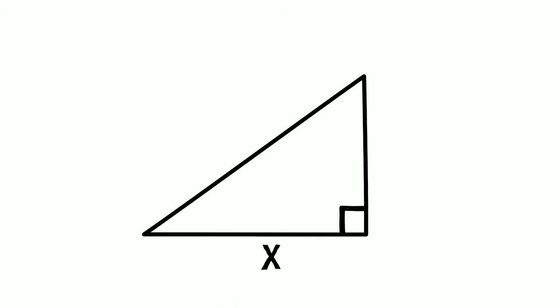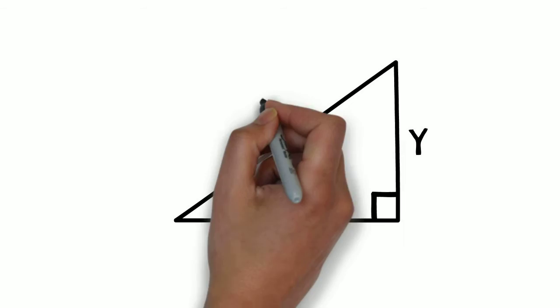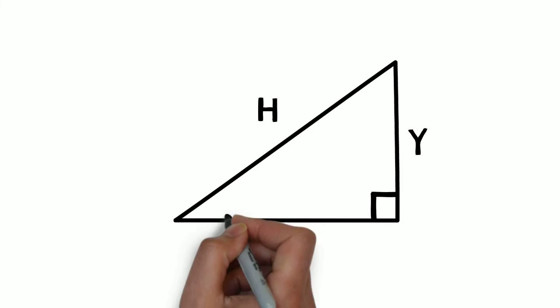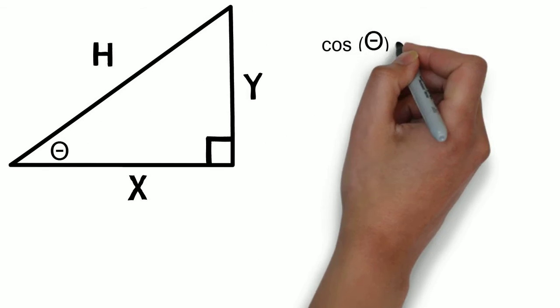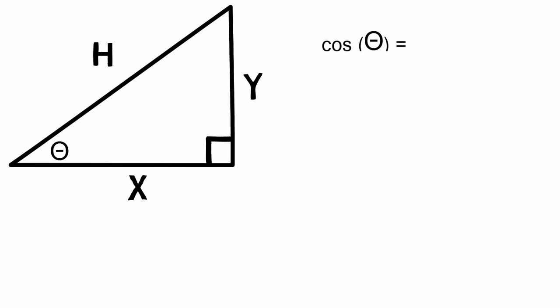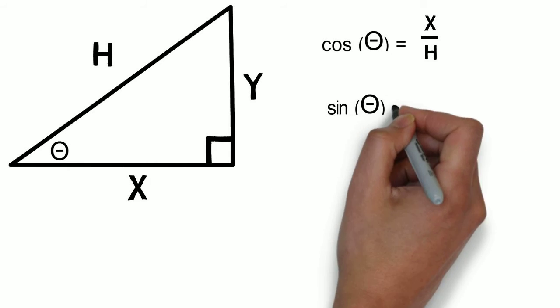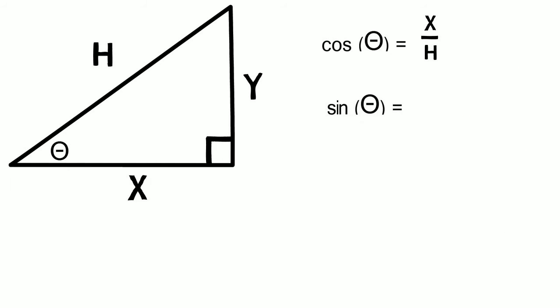Let's draw a right triangle with sides x and y, hypotenuse h, and angle theta. Cosine of theta equals the adjacent over the hypotenuse, or x over h, and sine of theta equals opposite over hypotenuse, or y over h.